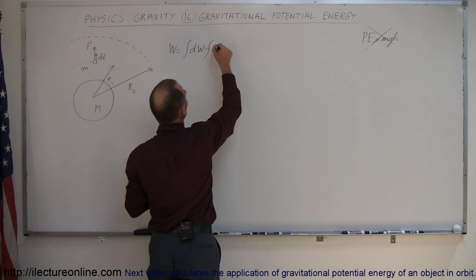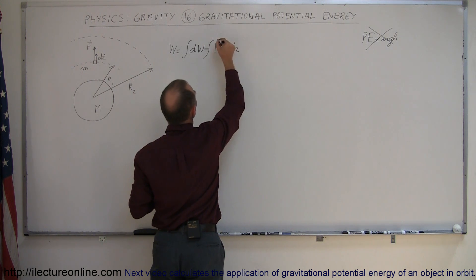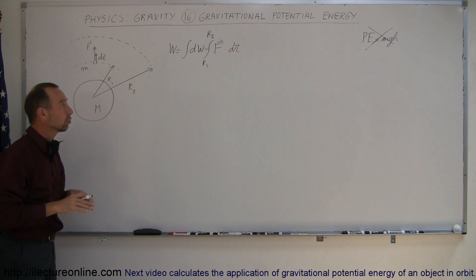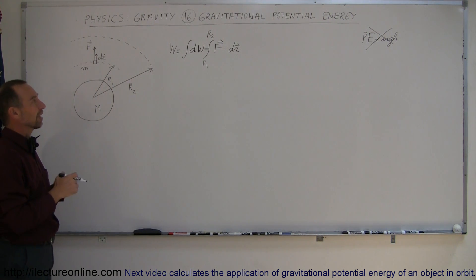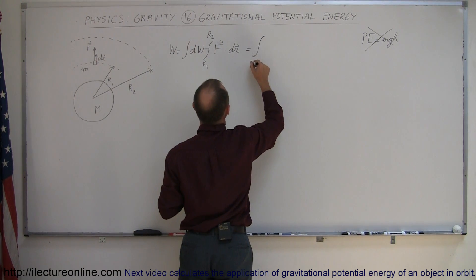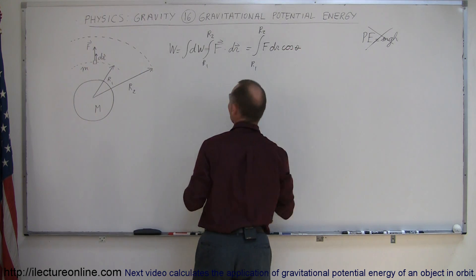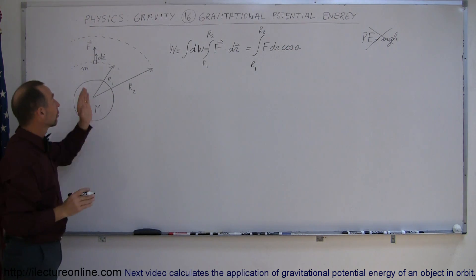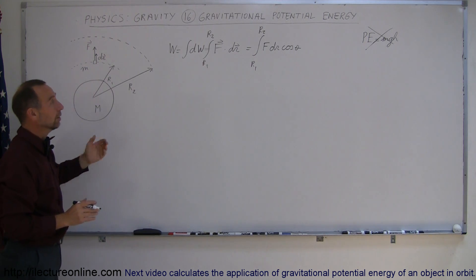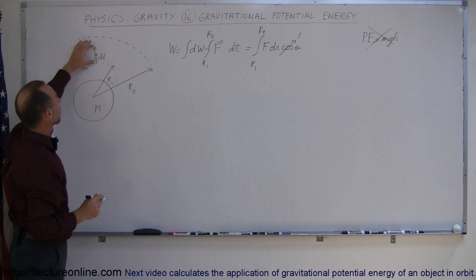The work done is equal to force times distance, and to do a small amount of work over an infinitesimally small distance is F dot dr. Of course these are vectors, and we have to integrate from r1 to r2. F dot dr equals F times dr times the cosine of the angle between them. Since the force required to lift this mass up is in the same direction as the motion, the angle between them is 0, and cosine of 0 is 1, so we can simply set that factor to 1.